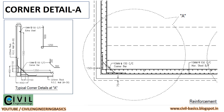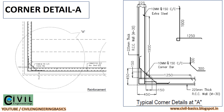First of all we will study the Corner A detail of the drawing. We will see the reinforcement details one by one. First we will see the horizontal reinforcement — here it is 10 mm diameter at 150 mm center to center on both faces, meaning reinforcement should be placed on both the outer side and inner side of the wall. Now we will see the corner bar, marked in red. The corner bar given here is 10 mm diameter at 150 mm center to center, with 45 degree bends, and must be placed as per the drawing.